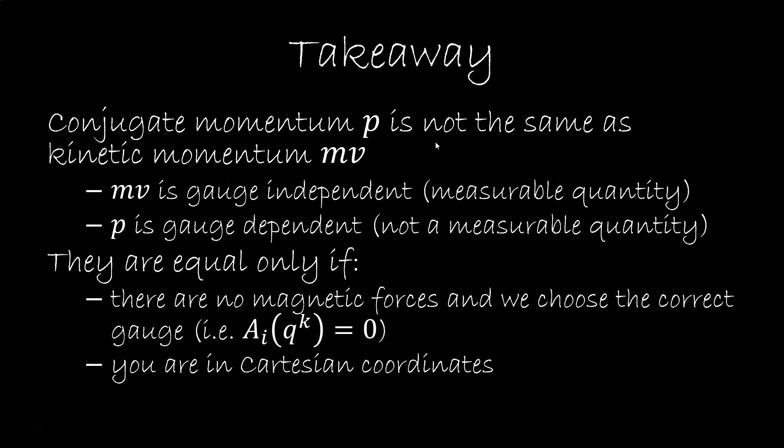This should give you a sense that conjugate momentum p is not the same as kinetic momentum mv. The most important difference to me is that mv is gauge independent, it is a measurable quantity. p instead is gauge dependent and is not a measurable quantity. This is already true in classical mechanics, no need to drag in more complicated theories. p is equal to mv only if there are no magnetic forces, you are in an inertial frame using a Cartesian coordinate system. In all other cases, your mileage may vary.